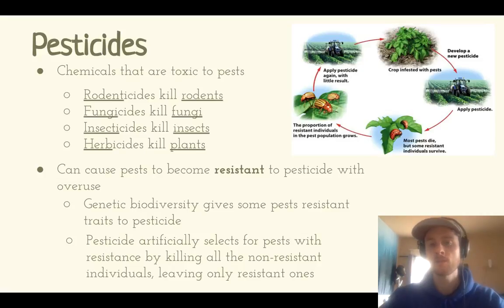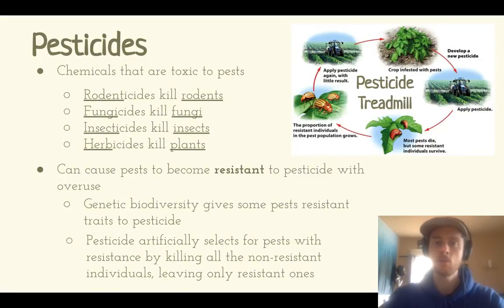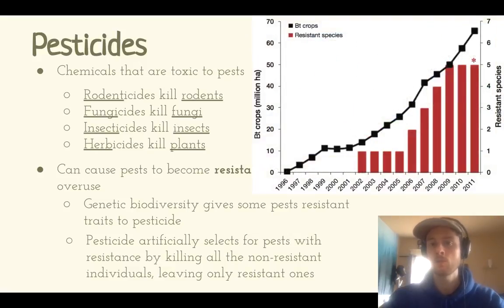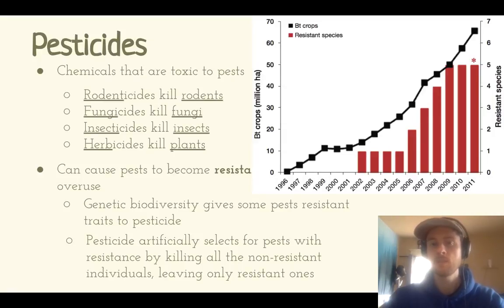This effect is called the pesticide treadmill — a never-ending cycle of having to constantly develop new pesticides because pests become resistant to the old ones. Looking at a graph of BT corn use over time, BT corn is genetically modified to produce its own insecticide. The more we use BT corn and arm it with built-in insecticide, the more insects are evolving resistance to it.